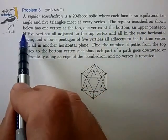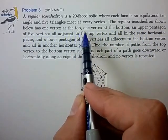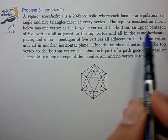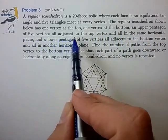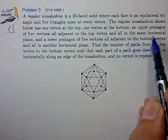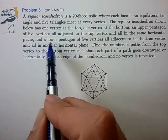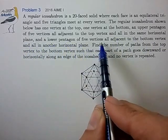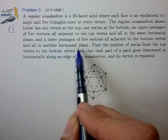The regular icosahedron shown below has one vertex on the top, one on the bottom, and an upper pentagon of five vertices all adjacent to the top vertex and all in the same horizontal plane, and a lower pentagon of five vertices also in a single horizontal plane.